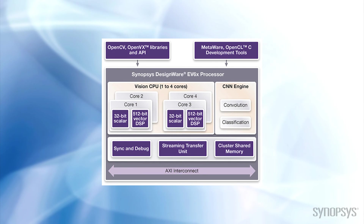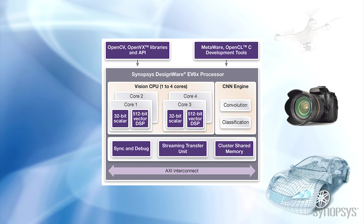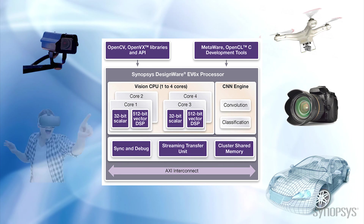Embedded vision processors like Synopsys DesignWare EV6X embedded vision processors support the unique performance needs of vision-enabled applications within low power budgets. The EV6X processors are available with a programmable CNN engine that works in parallel with its vision CPUs, making the EV6X particularly efficient for applications such as autonomous vehicles and drones, where multiple cameras and vision algorithms are used concurrently.